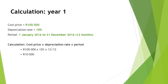In order to calculate the depreciation on the vehicle using the straight line method, you will need to use the following: the cost price, depreciation rate, and the period. In our example, the cost price is given as 100,000 Rand, the depreciation rate is given as 10%, and the period is 1 January 2016 to 31 December 2016, thus 12 months.